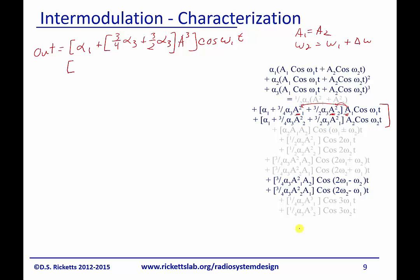Likewise, I can do the same thing for the second one, Alpha 1 plus 3 quarters Alpha 3 plus 3 halves Alpha 3, A cubed, cosine Omega 1 plus Delta Omega. And I can simplify this if I need to. It simply is going to be 9 fourths Alpha 3.